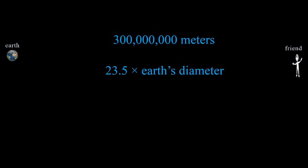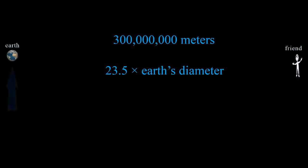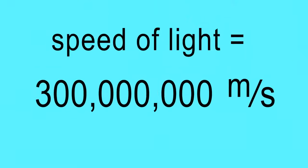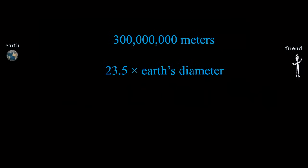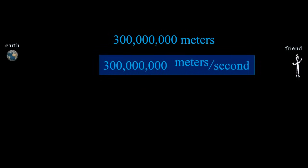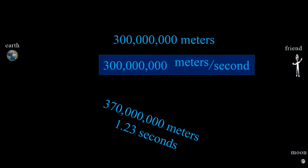Now let's talk about the speed of light so we can tie it to frequency and wavelength. Speed is how long it takes to get from one place to another. Let's say you have a friend standing 300 million meters away from Earth — about 23.5 times the Earth's diameter — waiting for a signal from you on Earth. The speed of light happens to be 300 million meters per second, so it takes one second for the flash of red light to reach your friend. Interestingly, when your friend sees the light, they are seeing what you did one second in the past. More realistically: it would take 1.23 seconds for light to travel 370 million meters to the moon, so when we look at the moon, we see what happened on its surface 1.23 seconds in the past.